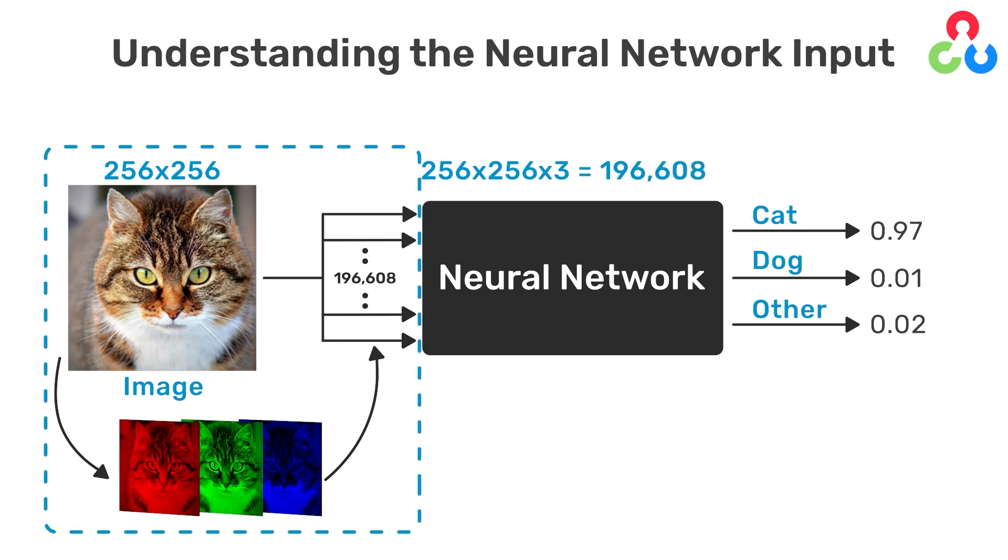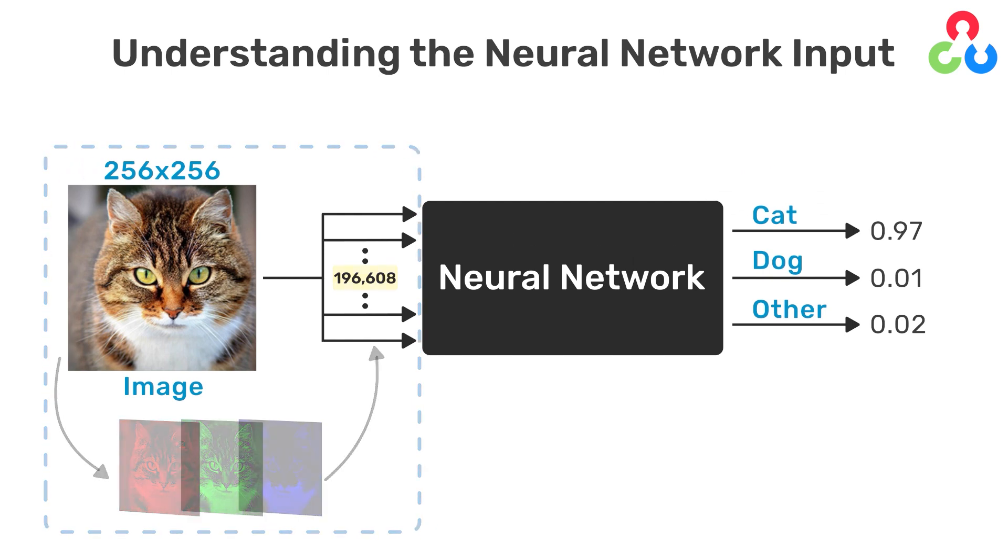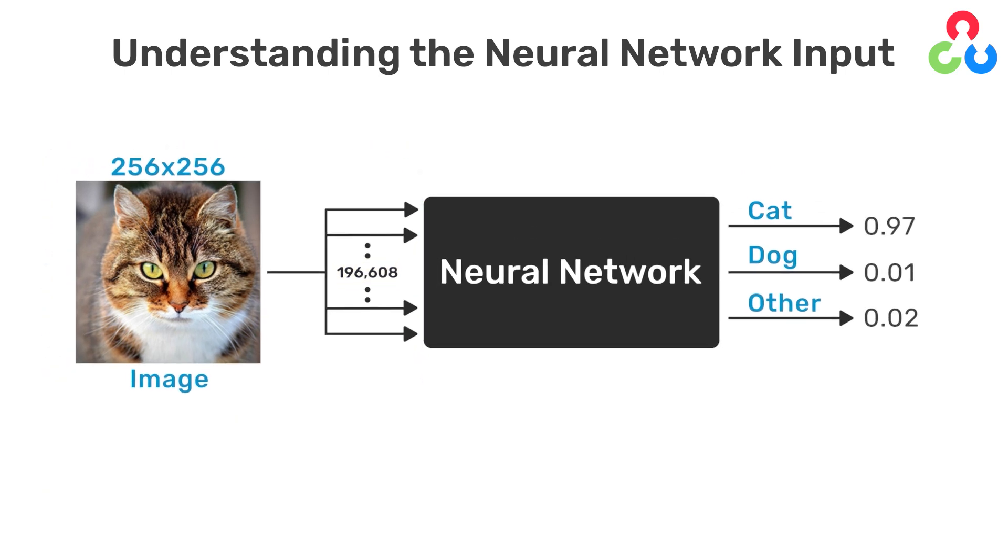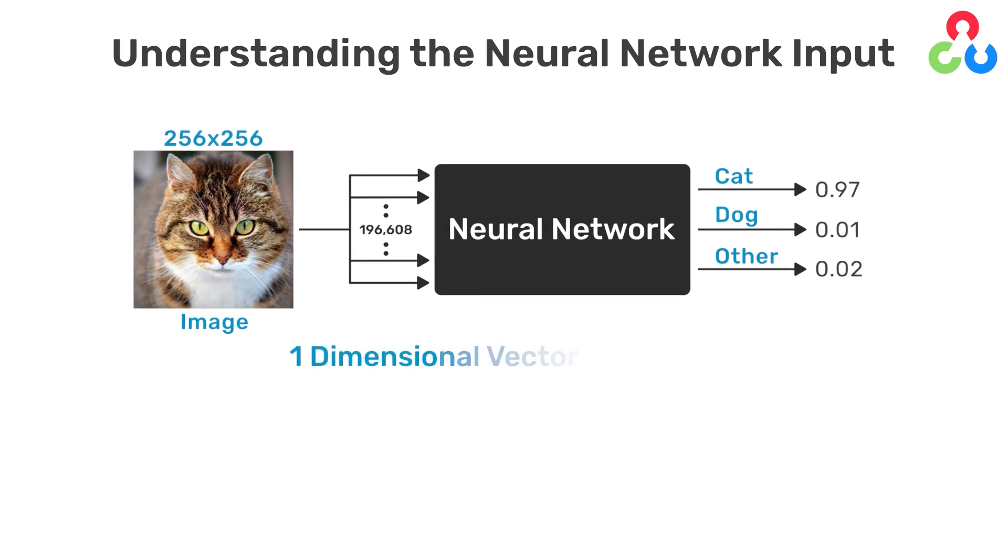Here we're showing that the neural network expects an input that has a total of nearly 200,000 numbers, but we haven't yet specified a shape for that data. Depending on the type of network, the data could be represented as a one-dimensional vector or something more compact like three two-dimensional arrays where each array is 256 by 256.